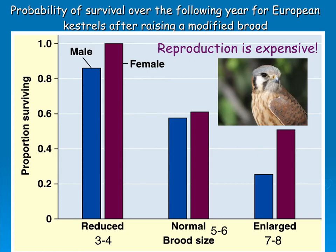A study of European kestrels looked at what happens when you reduce or increase the number of offspring, and what effect that has on the survivability of the parents. The study gave a pretty clear indication that reproduction is expensive — it's costly to the parents in time and energy. Care in kestrels is provided by both male and female. There's a negative correlation between brood size and parent survivability, and the enlarged brood of seven to eight was really exhausting for the parents.